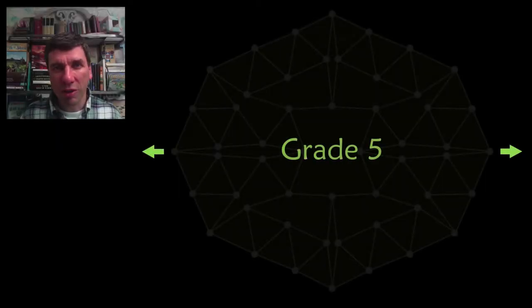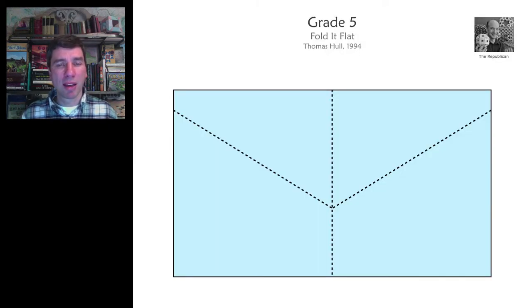The unsolved problem for grade 5 is at the intersection of art and mathematics. It comes from the world of origami. The question is, given creases on a piece of paper, how many ways can you fold it flat using all of those creases?